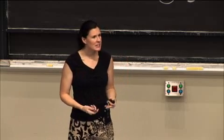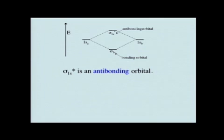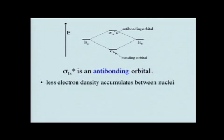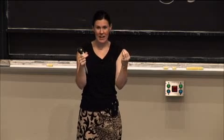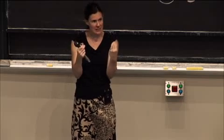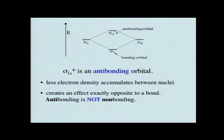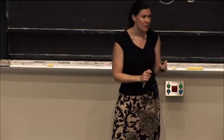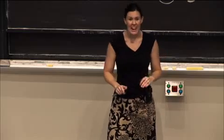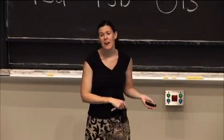Any time we see the star — sigma 1s* — that's an antibonding orbital. Because of that negative interference, we actually have less electron density between the nuclei than we did when they were two separate atoms. This is even worse than non-bonding; it's antibonding because we're getting rid of electron density between the two nuclei, and it's that electron density between the nuclei that holds two atoms together in a bond. It creates an effect that is exactly opposite of a bond. You might have thought non-bonding was the opposite of bonding — it's not. Antibonding is the opposite of bonding, and antibonding is not non-bonding.